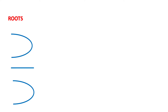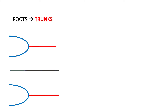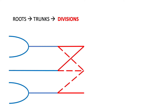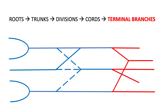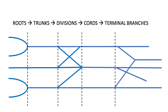The brachial plexus is essentially a map, and any map needs a starting point. For the brachial plexus this begins from the roots in the neck. The next part, as it transitions down the upper limb, are known as the trunks. Then after that come the divisions, followed by the cords, and finally it finishes as its terminal branches. Using this logical sequence you will hopefully never get lost, but it's not as simple as that.